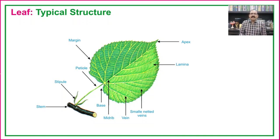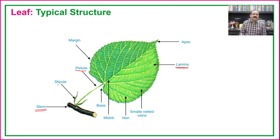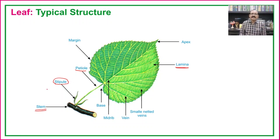Any part — leaf, branch, flower, or fruit — always develops from the stem. The leaf includes different parts: the petiole and the lamina. The scale-like structure present at the base of the leaf is known as the stipule, which may be present or absent. If the stipule is present, the leaf is known as stipulate; if absent, it is known as exstipulate.